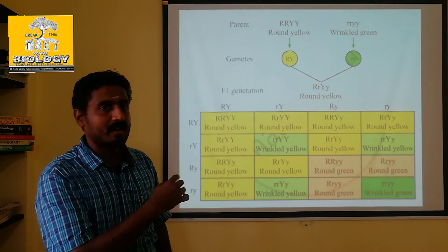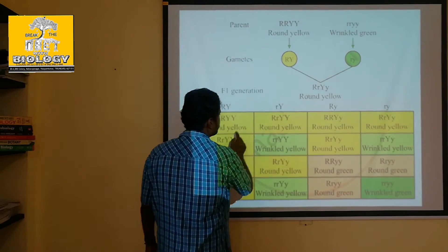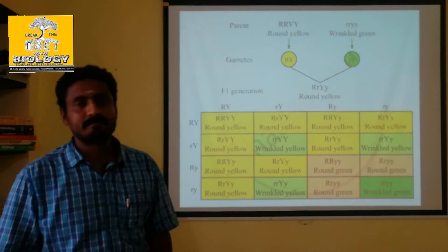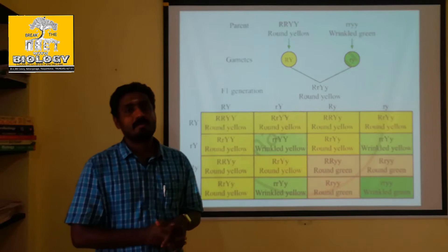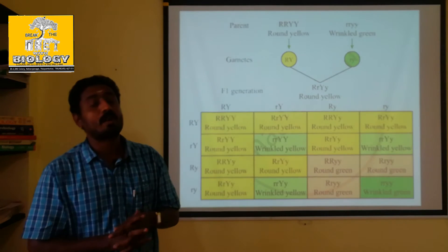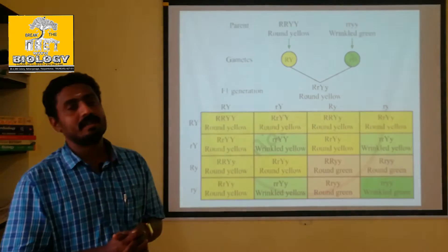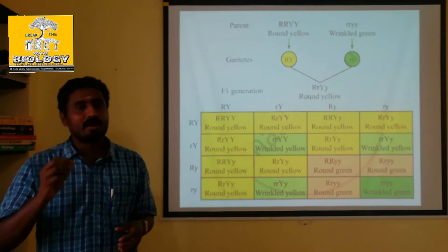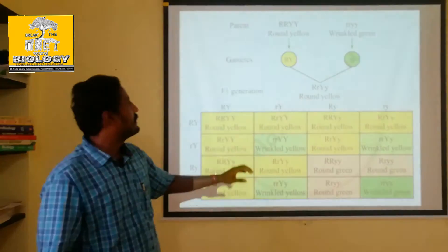It is a dihybrid cross. In the dihybrid cross, you will see the same thing, but then you will see the dihybrid test cross. One body individual is a round yellow form. Fuse in the F1 generation.